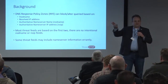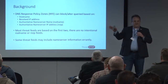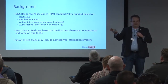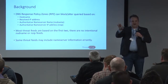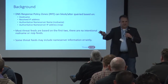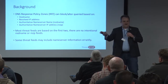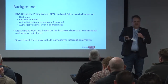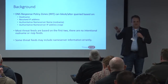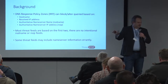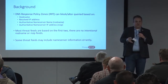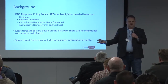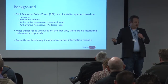Most people use only half of the functionality of RPZ. You can block on resolved IP address, you can block on the specific host name indicator or a wildcard. You can also block on the authoritative name server and the authoritative name server IP address. The problem is that no one actually distributes programmatic feeds of the name server indicators — there's no name server reputation.